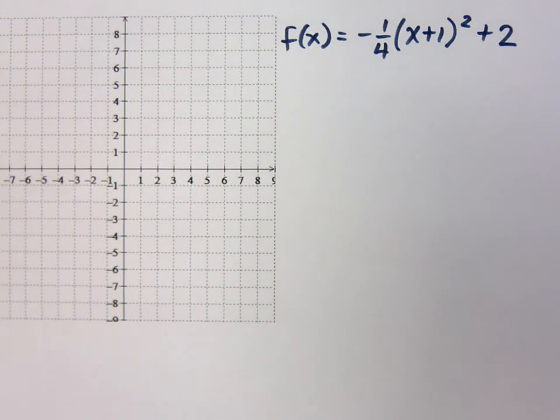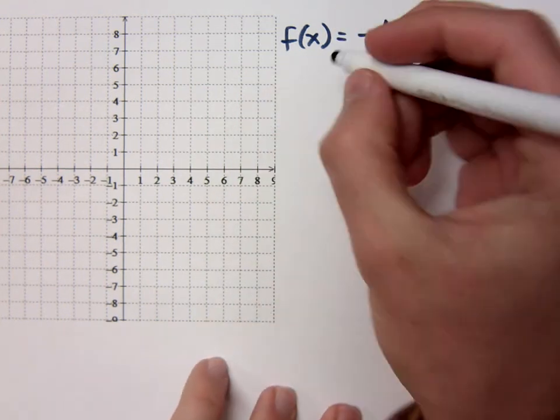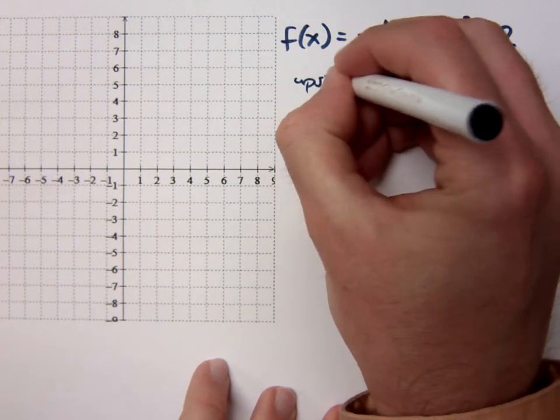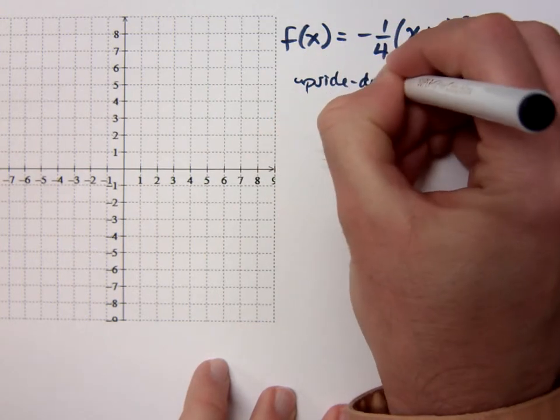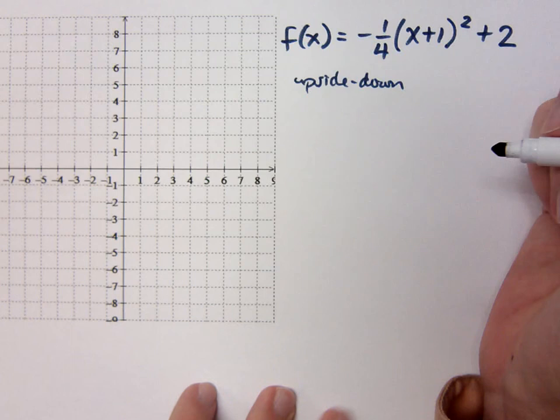Let's do another example of something that's already in that nice form for us to graph. Tell me everything you know about this. Upside down graph. You know that it's upside down. What tells you it's upside down? Negative coefficient. The negative coefficient tells me I'm upside down.